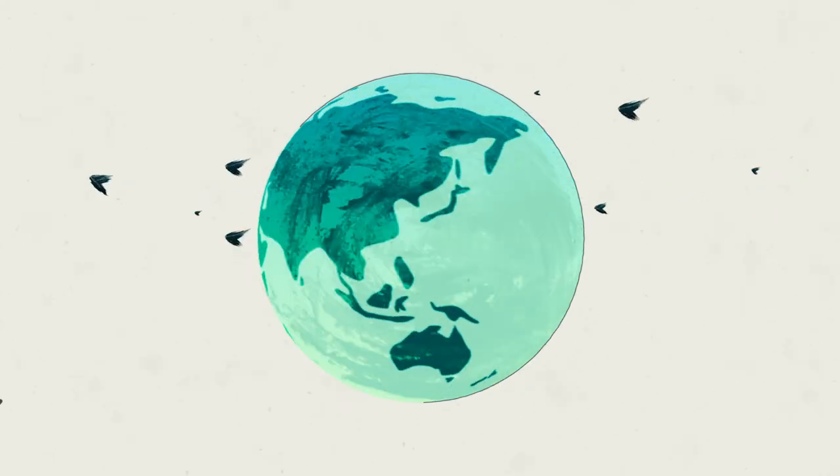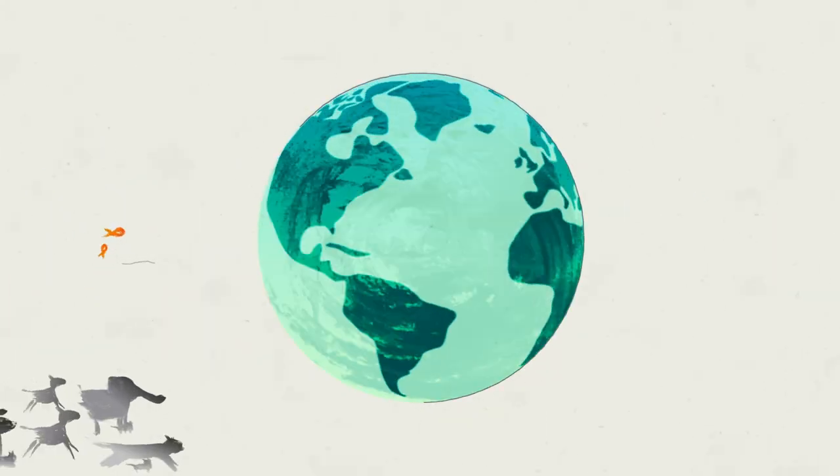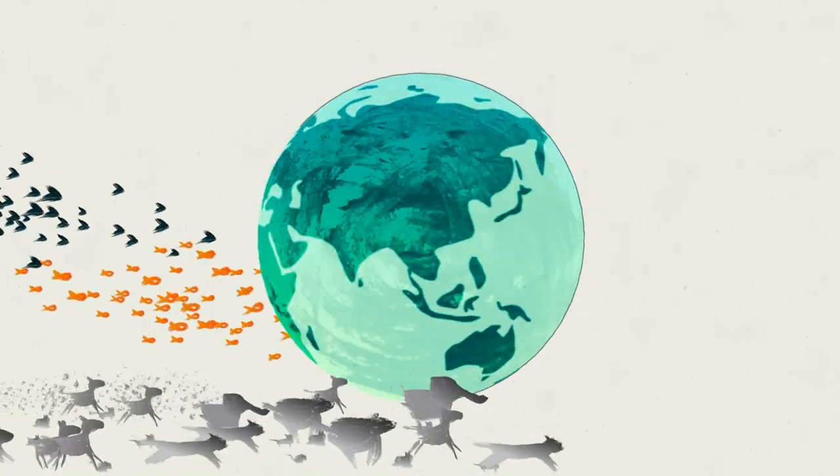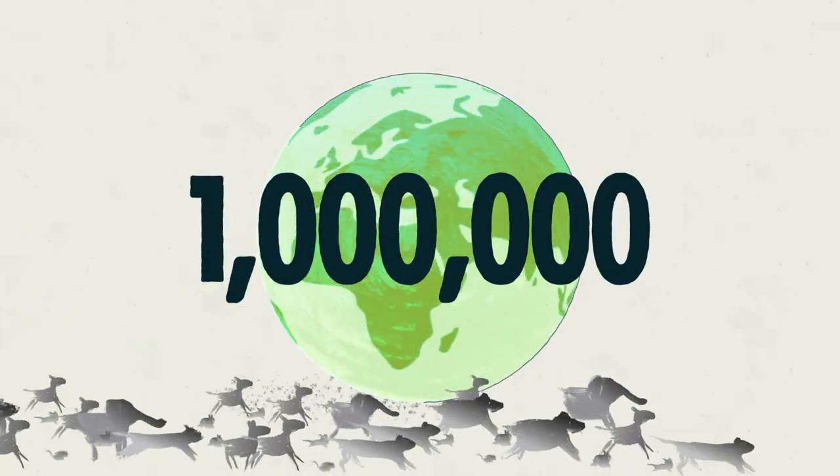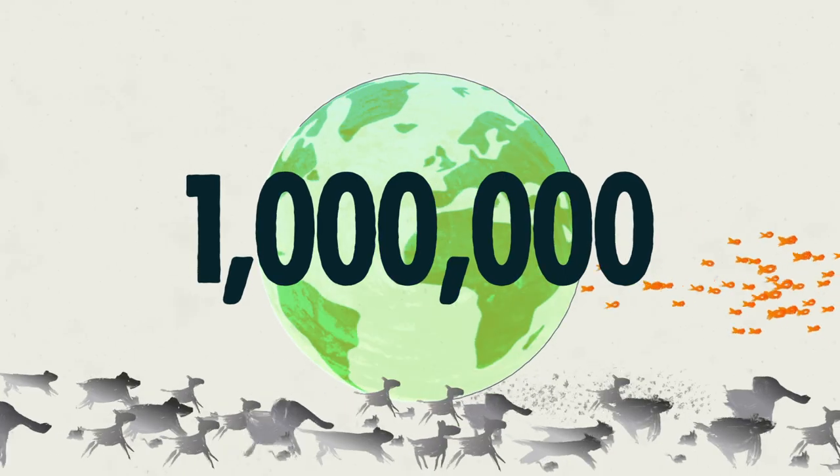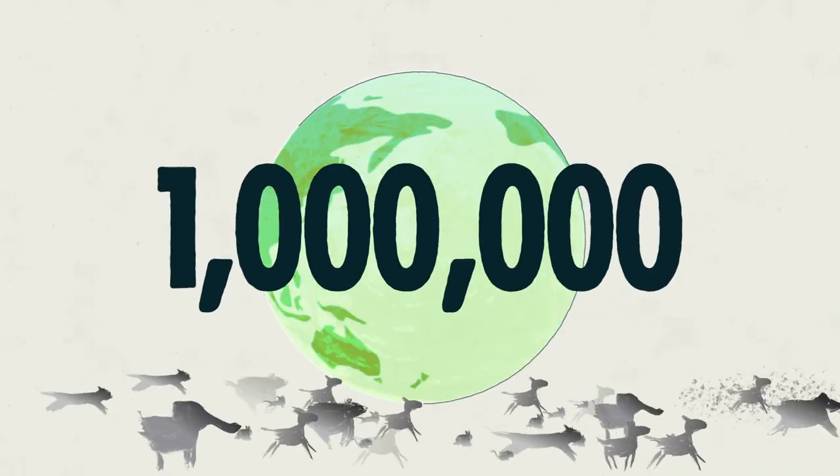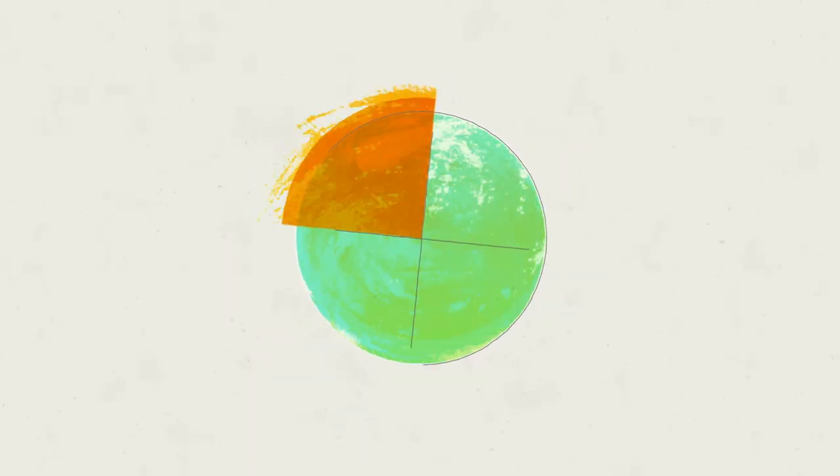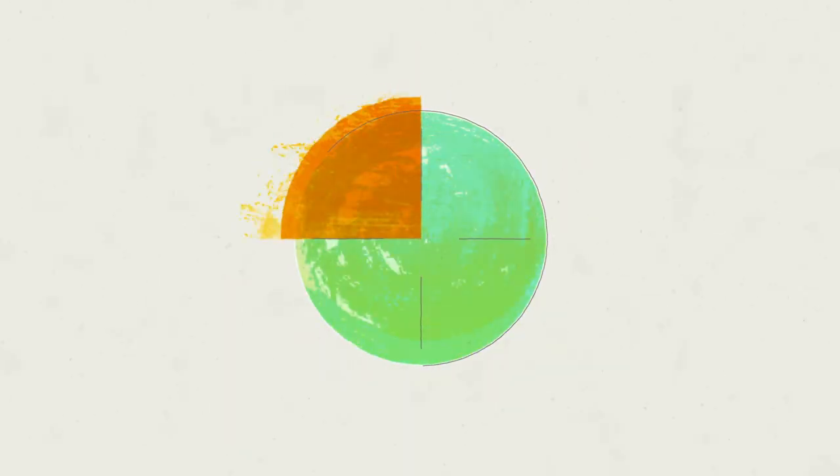Mass extinction has begun and humans are responsible. All over our beautiful planet, one million species are at risk of disappearing forever, a process that the pandemic might accelerate. One in four of all assessed animals, birds, and insects are on the brink of extinction.